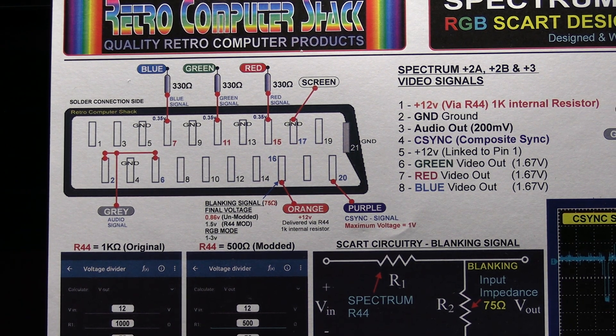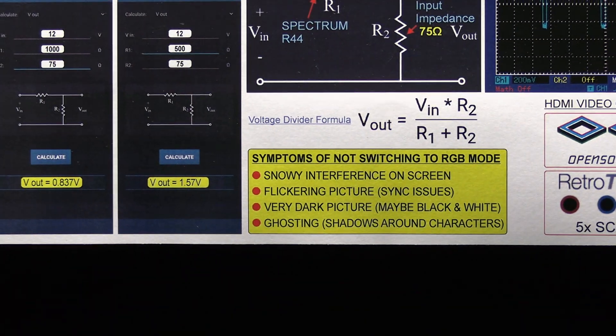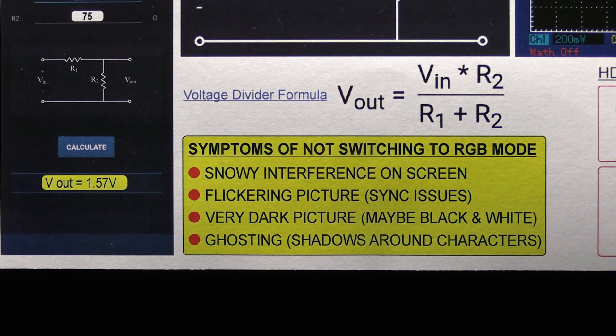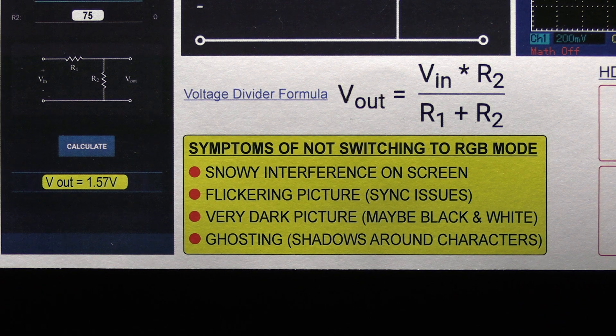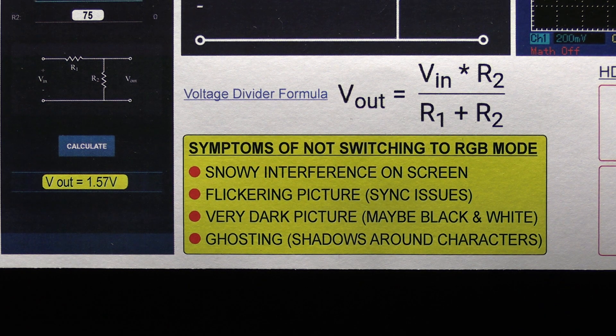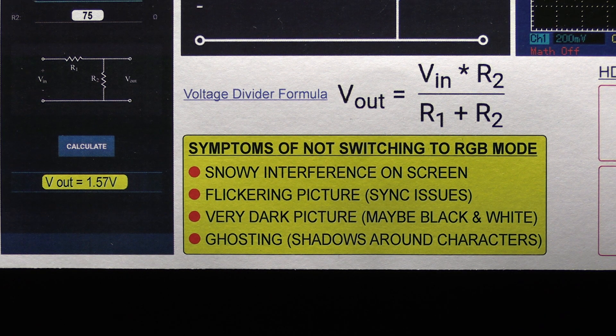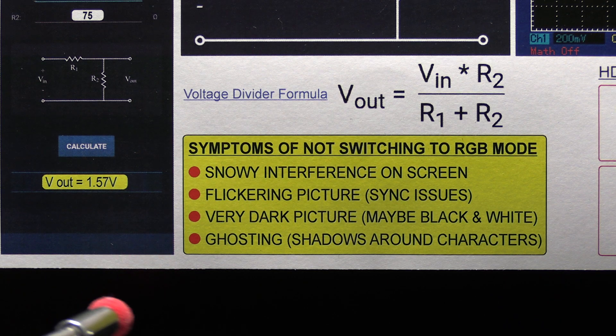When it does that, you'll see these sort of problems. Snowy interference on the screen, a bit like an old TV when the signal was weak and you see all the spots on the TV. That's more noticeable with a white background.